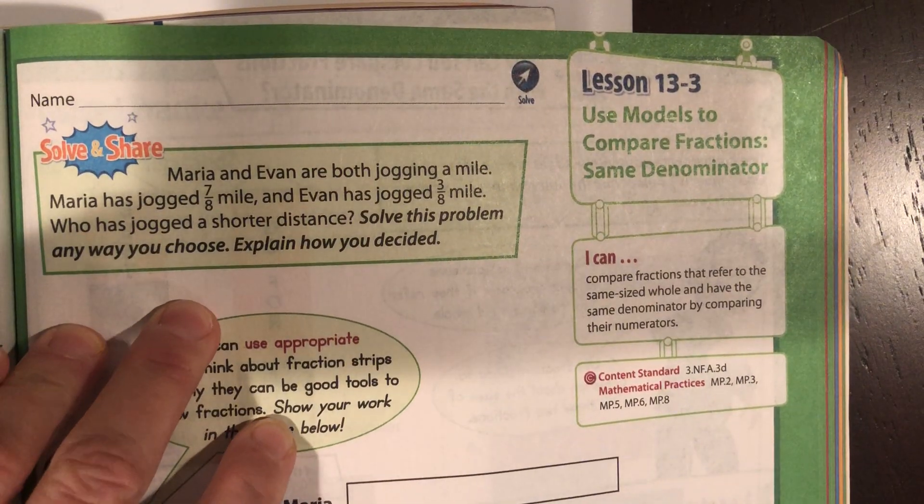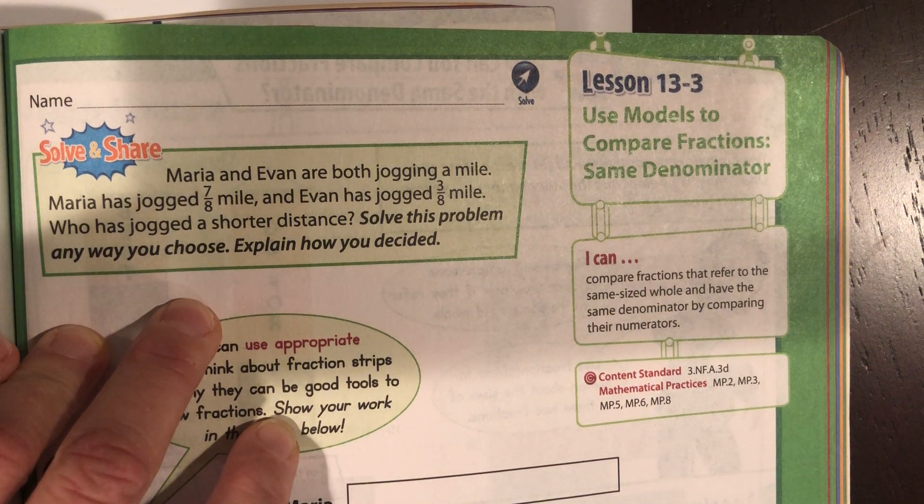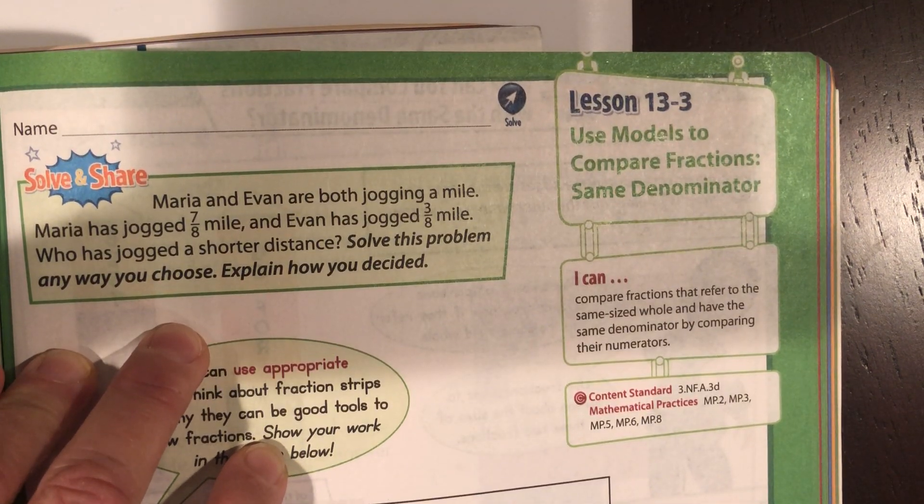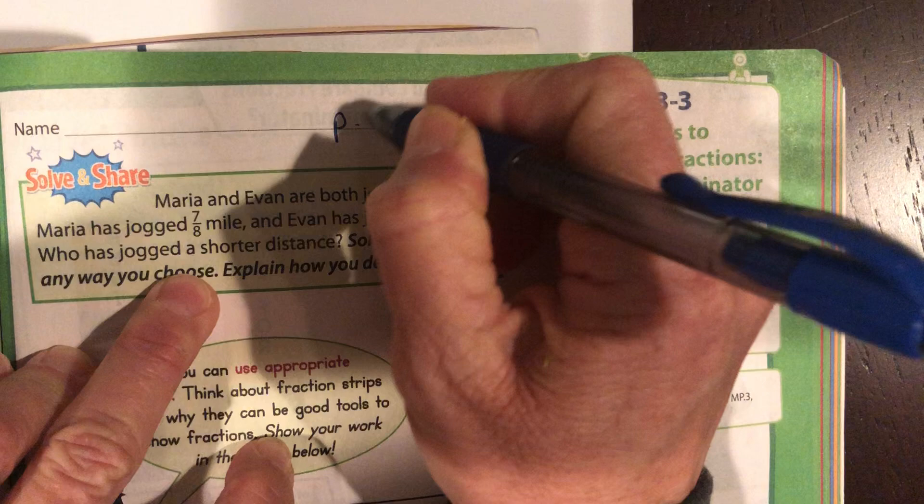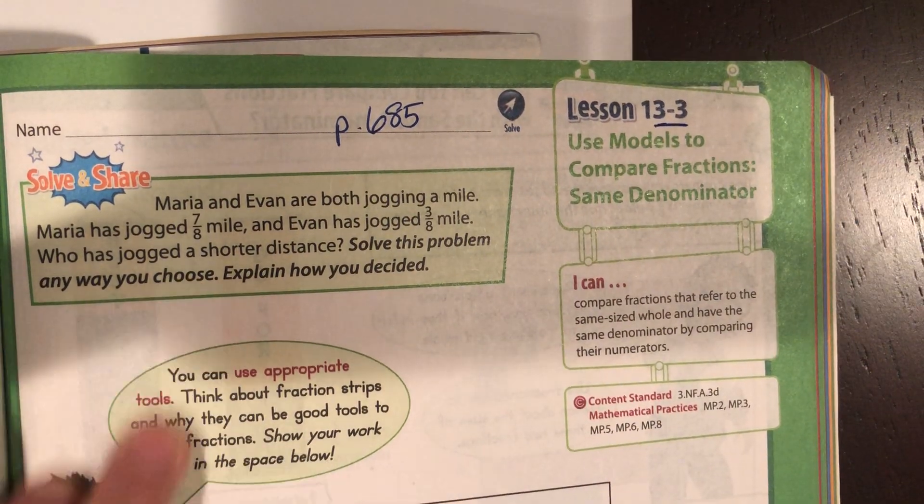Okay, we're going to do lesson 13-3 in your workbook. We are skipping lesson 13-2 and we're going to come back to it later. So you should be on page 685. Again, 13-3, not 13-2.